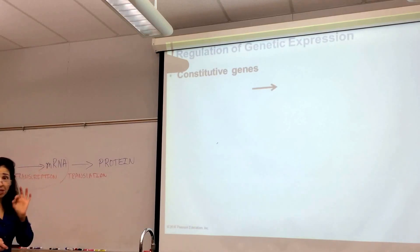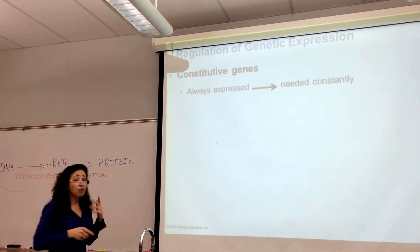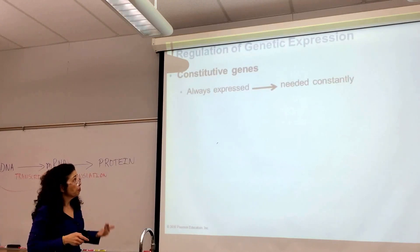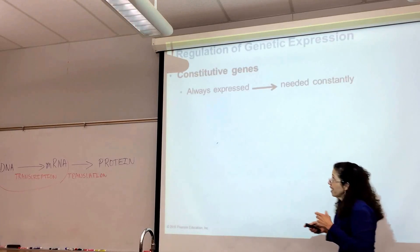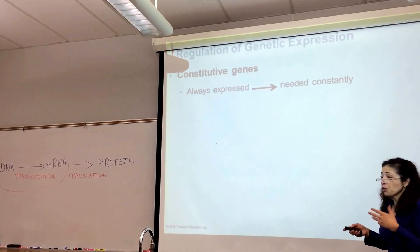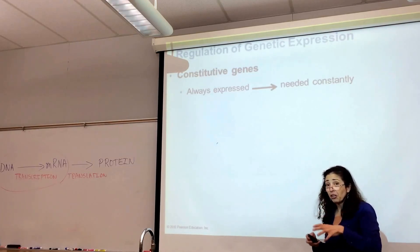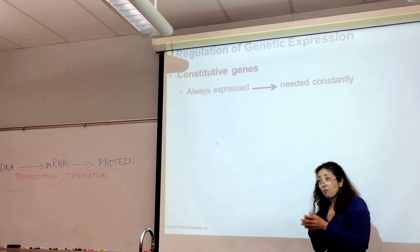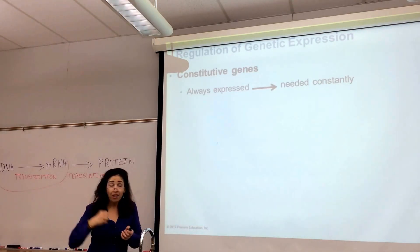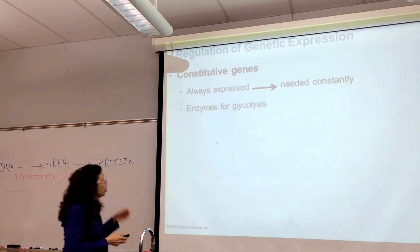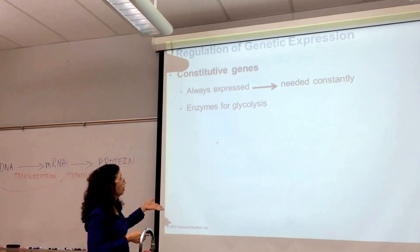Terms you need to be aware of: constitutive genes. Those are genes that are constantly being expressed because bacteria need them all the time. One example is the enzymes bacteria use for glycolysis — they utilize glucose to get energy, so it's important to always be expressing those genes.